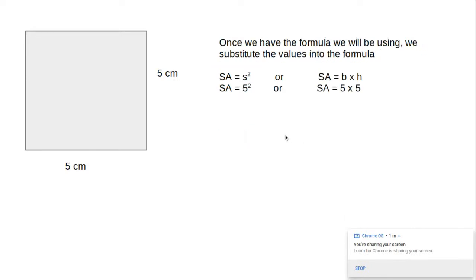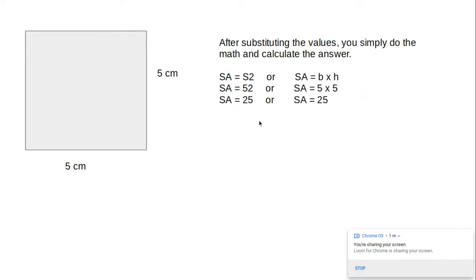After this, once you have the formula, as you see here, surface area is squared or the surface area is base times height, we just substitute the values. Side is 5, base is 5, height is 5. Once you've substituted, you do the math. Oops, I didn't change this one here. This should say side squared and 5 squared. 5 squared is 25, and base times height, 5 times 5, is 25.